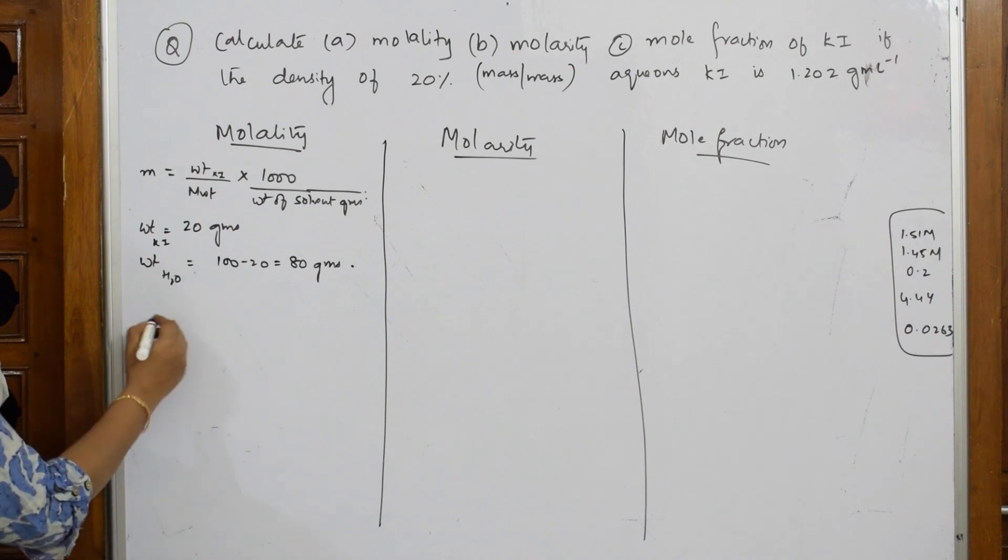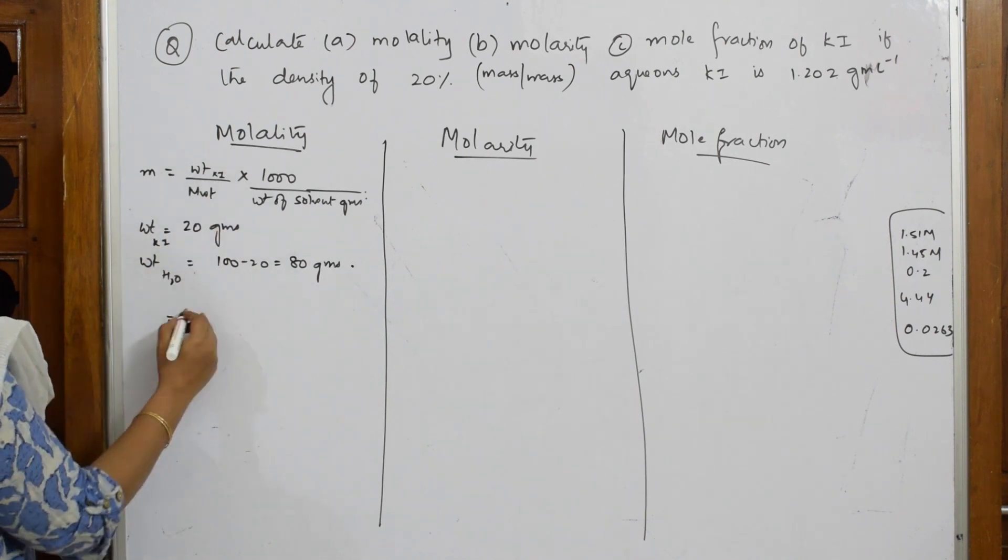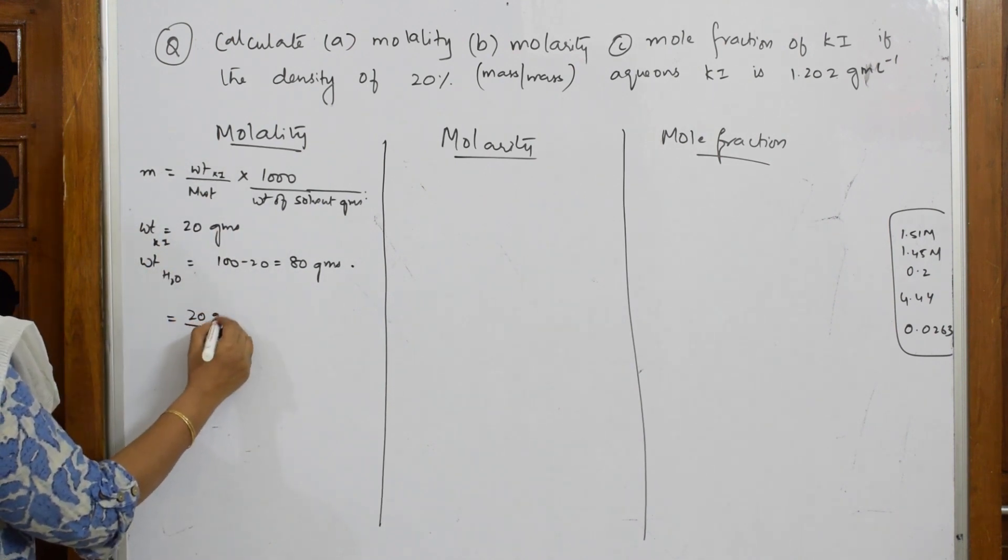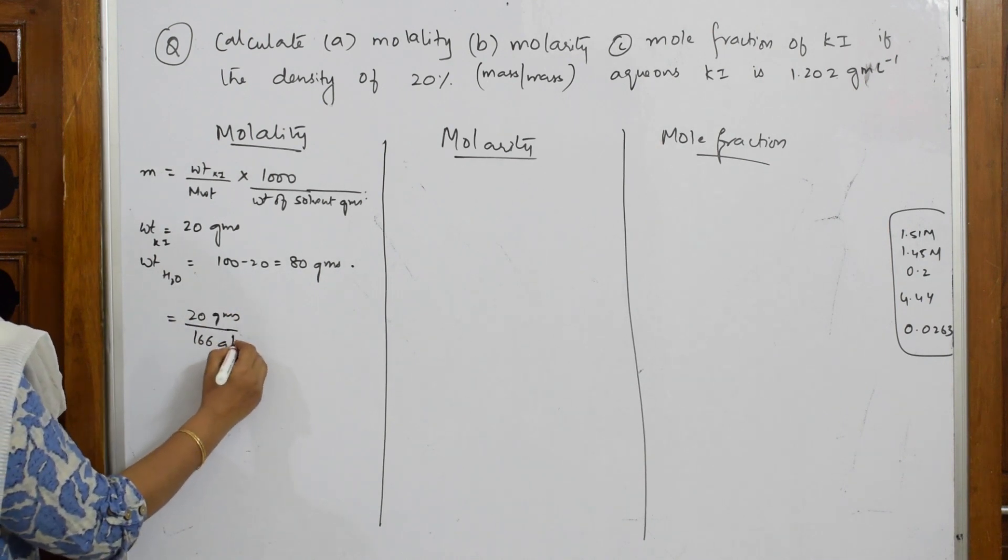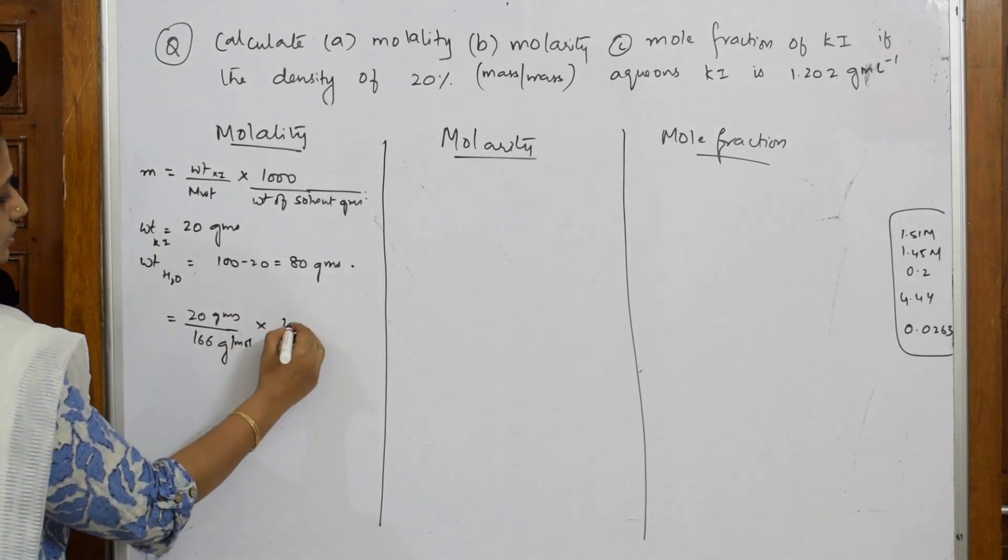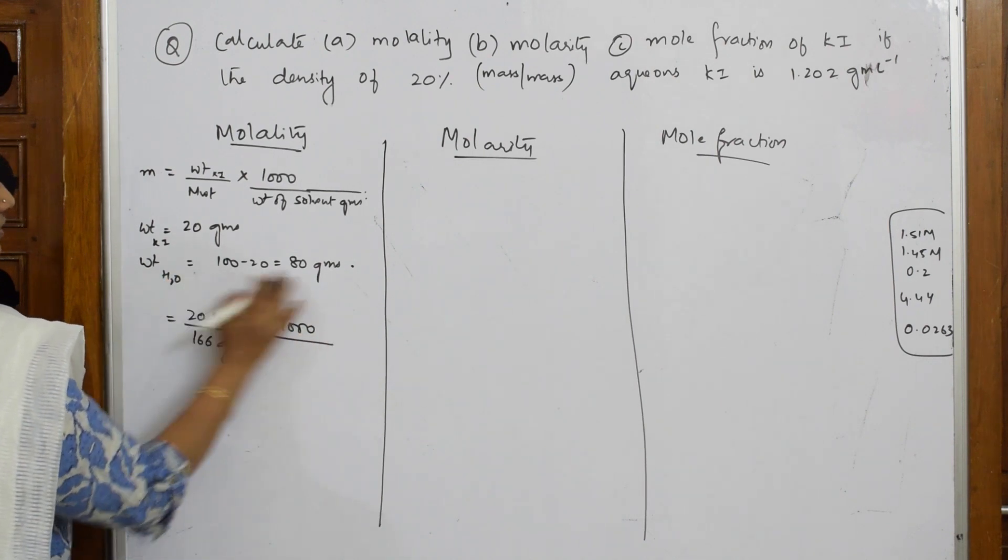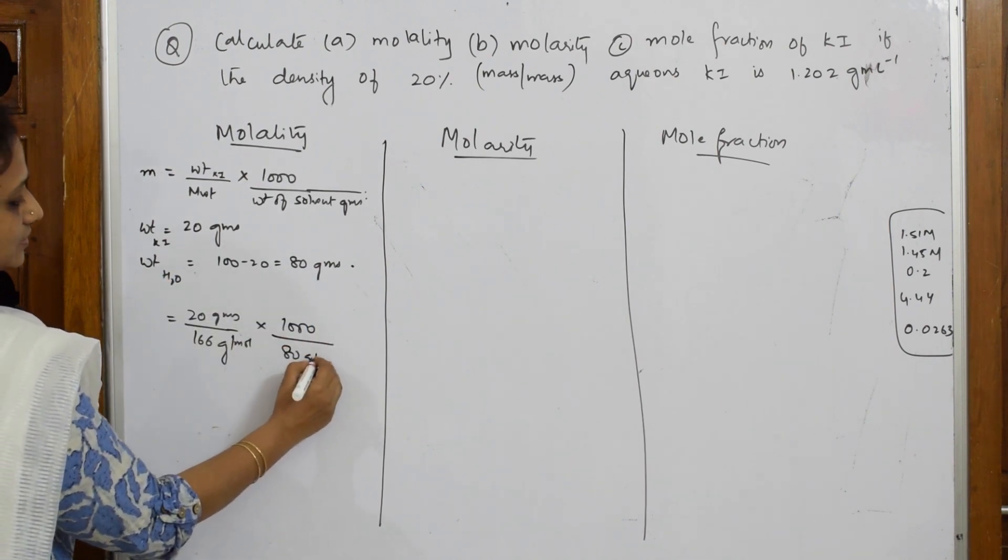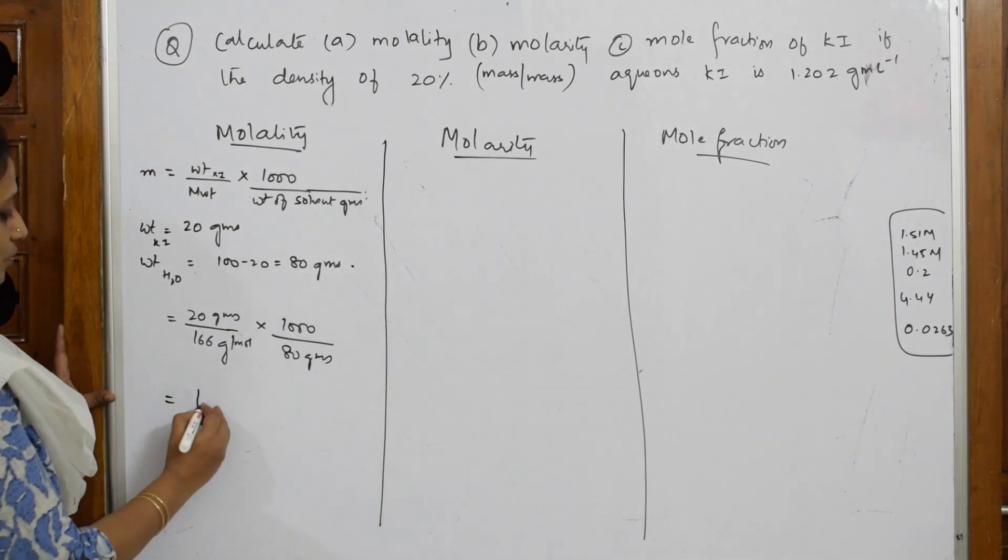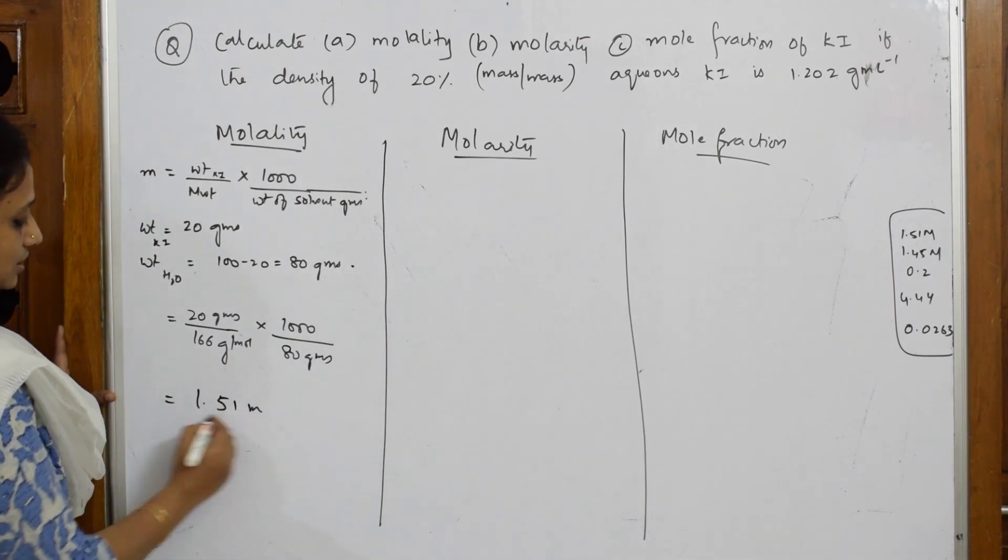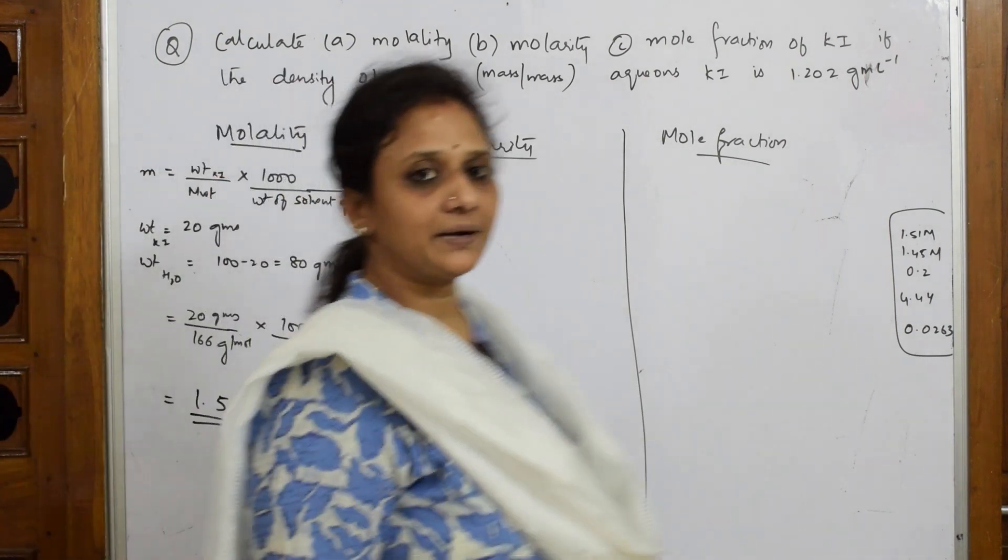I can substitute directly, which is equal to weight of potassium iodide, 20 grams, molecular weight is 166 gram per mole into 1000 divided by solvent weight is 80 grams. When I solve this, I get an answer of 1.51 molar. This is done.